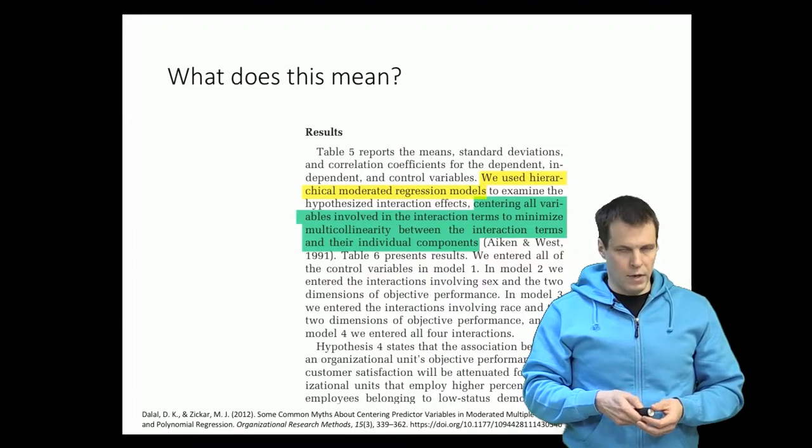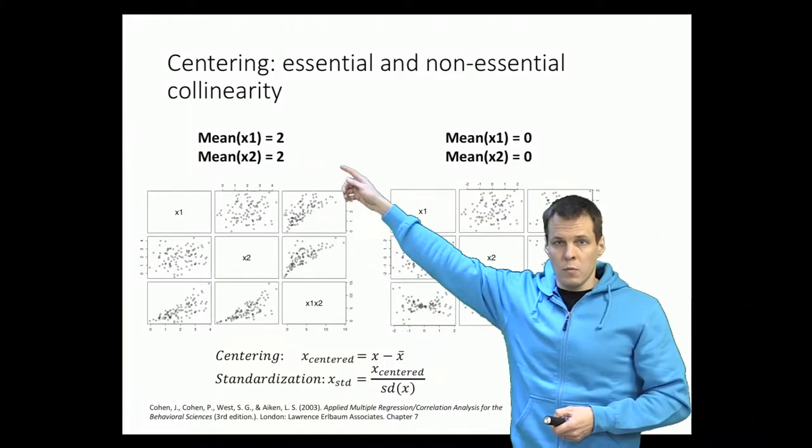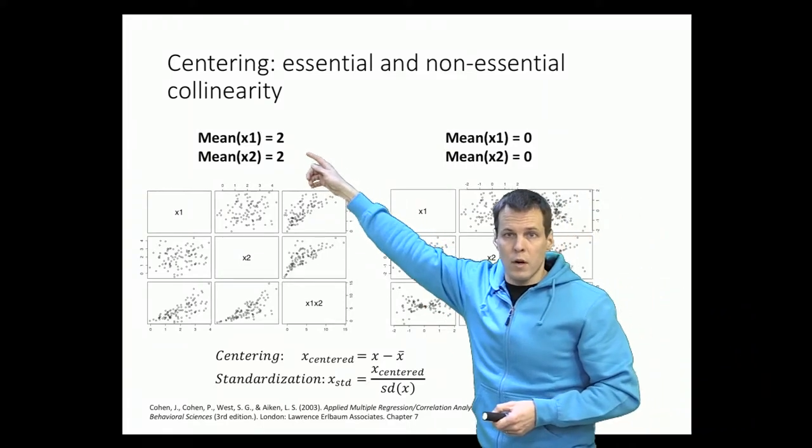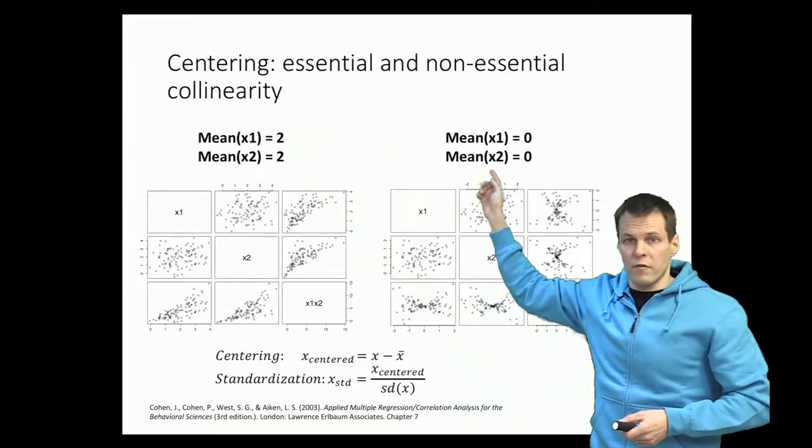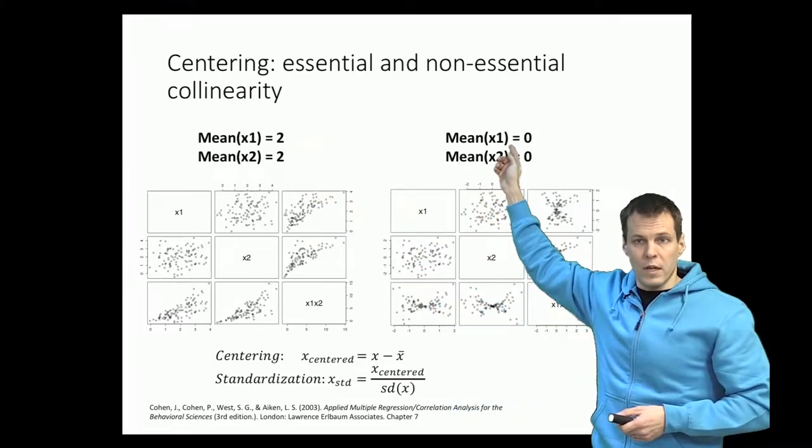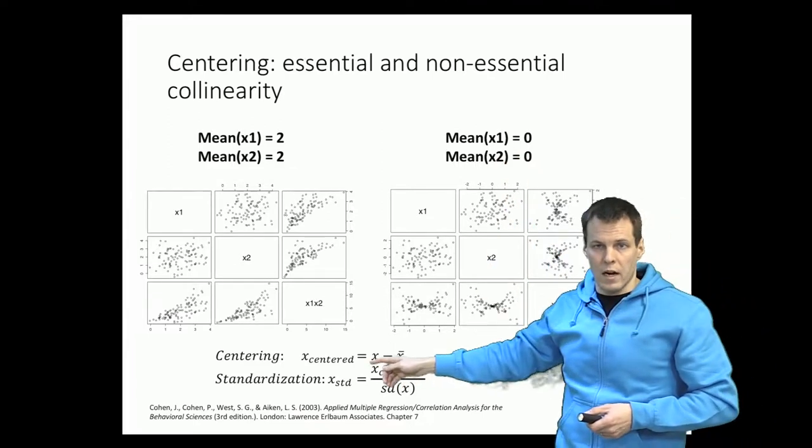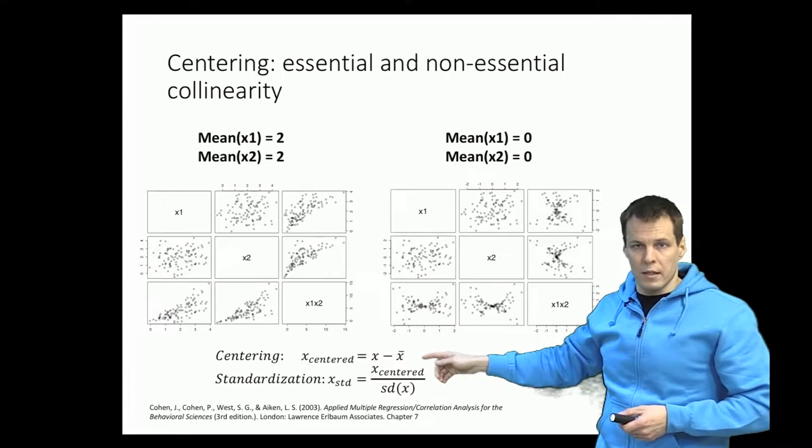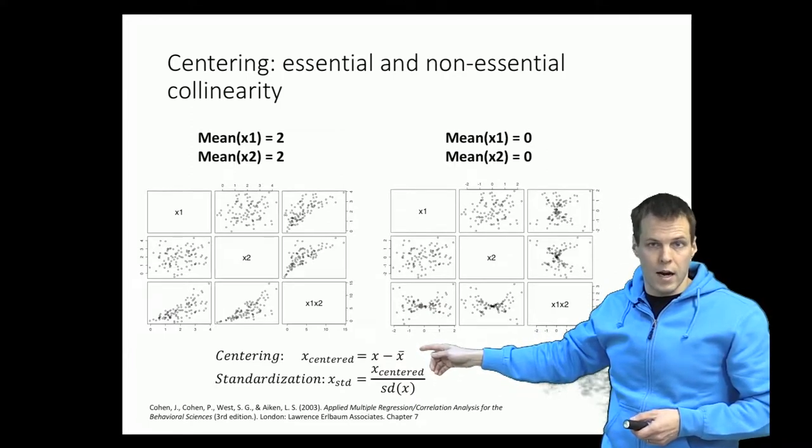So let's take a look at some data and we have two random numbers here X1 and X2. Here the X1 and X2 have means of 2 and here we have centered the variables X1 and X2 to have means of 0. So the idea of centering is that you take the original variable and then you subtract the mean and that will make the mean of the variable to be 0 and we say that the variable is centered.